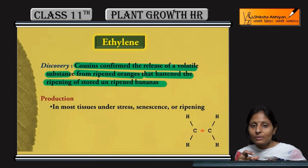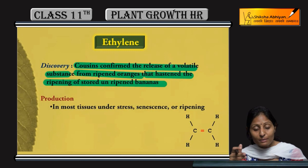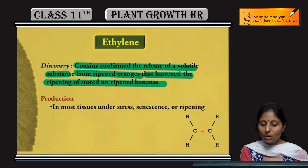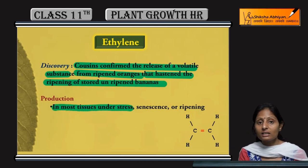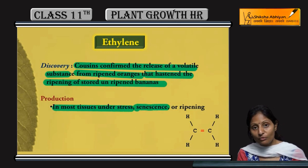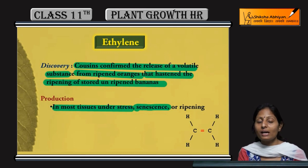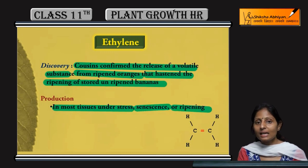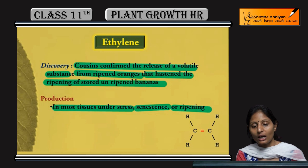Because ethylene is a gas, we also call it a gaseous hormone. Its main production occurs in most tissues under stressed conditions — if any tissue is under stress, it will produce ethylene. Production also occurs at the time of senescence, and also at the time of ripening, because ethylene is an inhibitory hormone.